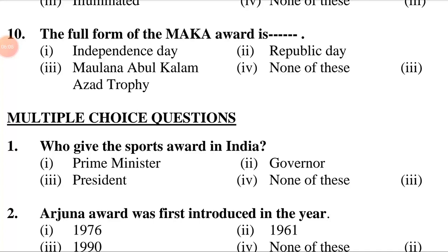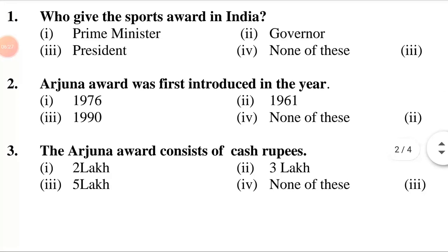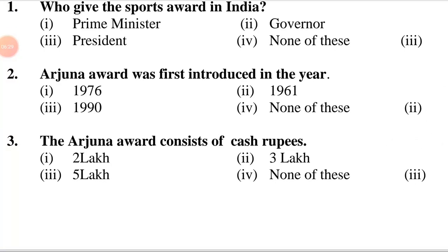Multiple choice questions. Who gives the sports award in India? First option: Prime Minister. Second option: Governor. Third option: President. Fourth option: none of these. The answer is 3rd option, President.